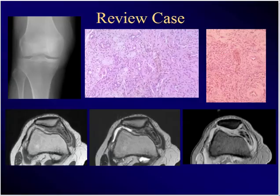Knee pain, swelling, no history of trauma — 35-year-old who comes to see you, this radiograph, this MRI. Notice a mixed signal on this. Here's the histopath. What's the diagnosis? PVNS — pigmented villonodular synovitis.